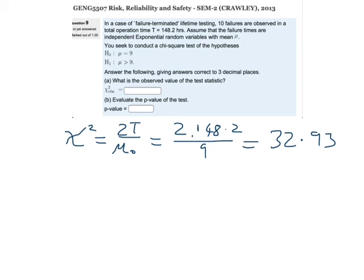Well, as previously, because it is failure terminated, that means the degrees of freedom is equal to 2r, which in this case is equal to 20.